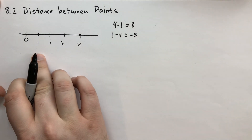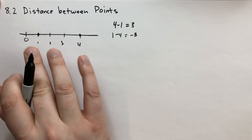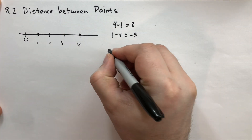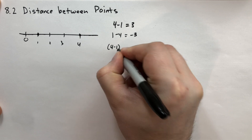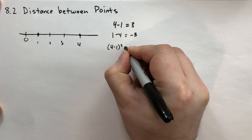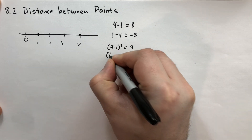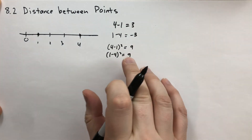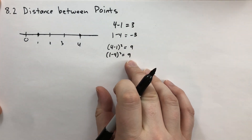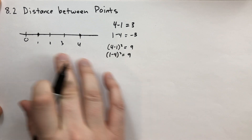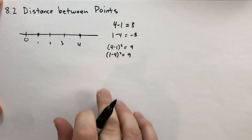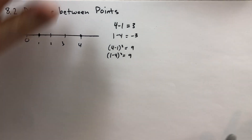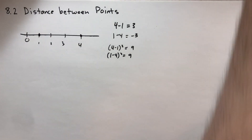So that isn't going to work. If we take the square of the difference — four minus one squared — we're going to get nine. And one minus four squared also equals nine. There we have a positive number that shows up each time. It doesn't matter which order you take the points; you always get a positive number. So this distance squared is positive — it always will be positive.